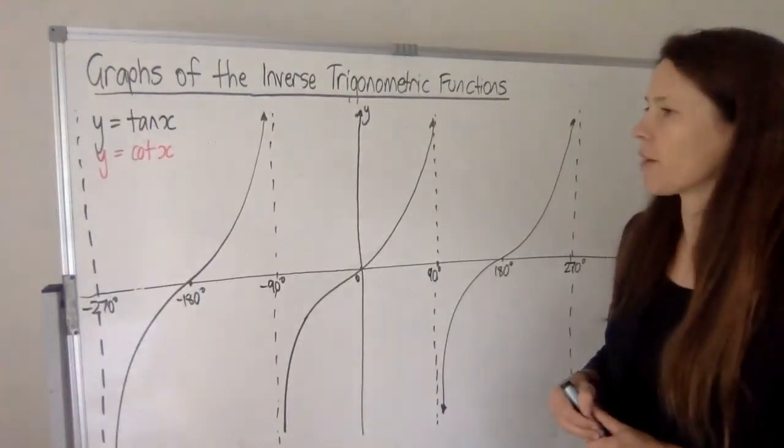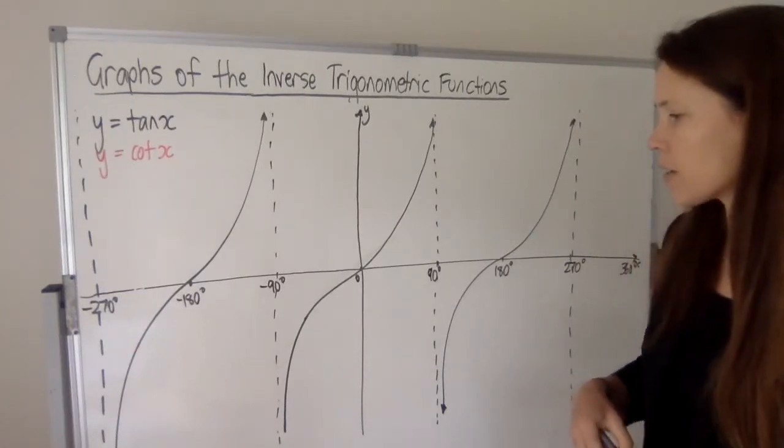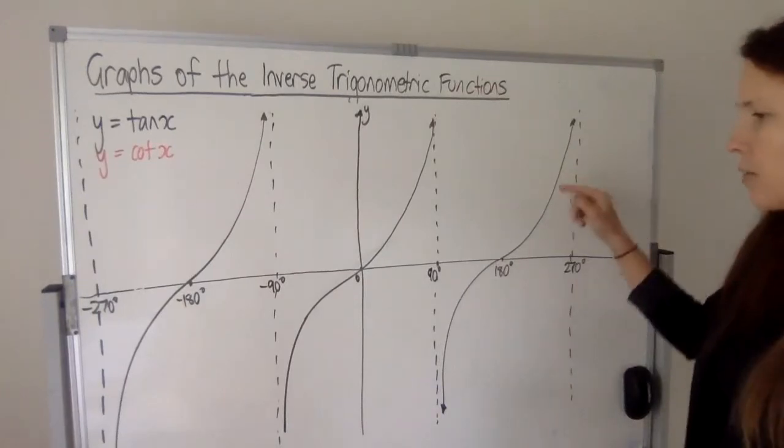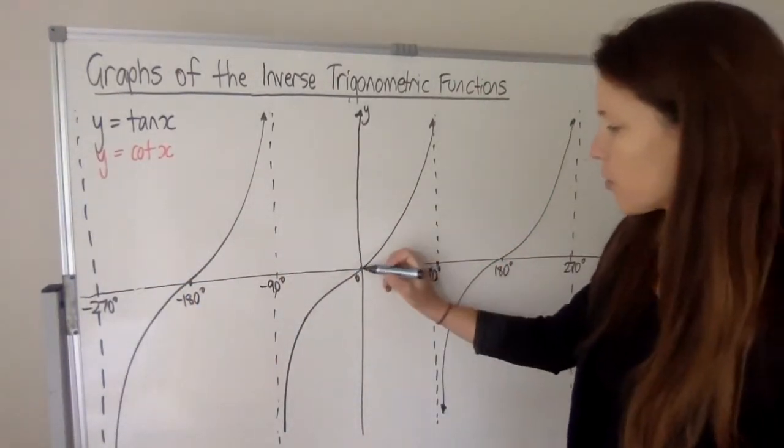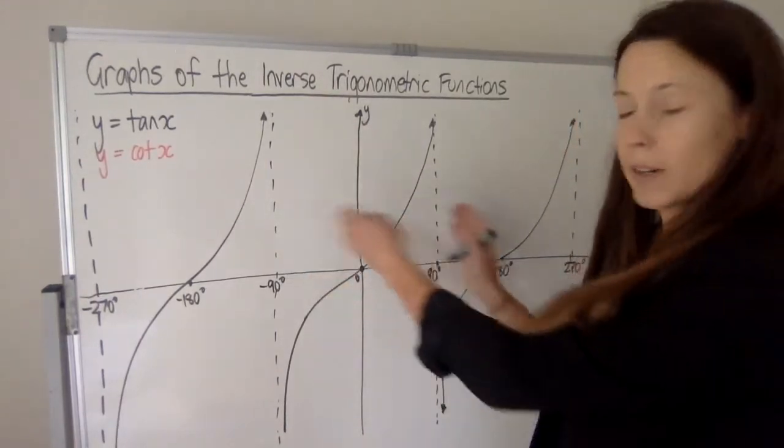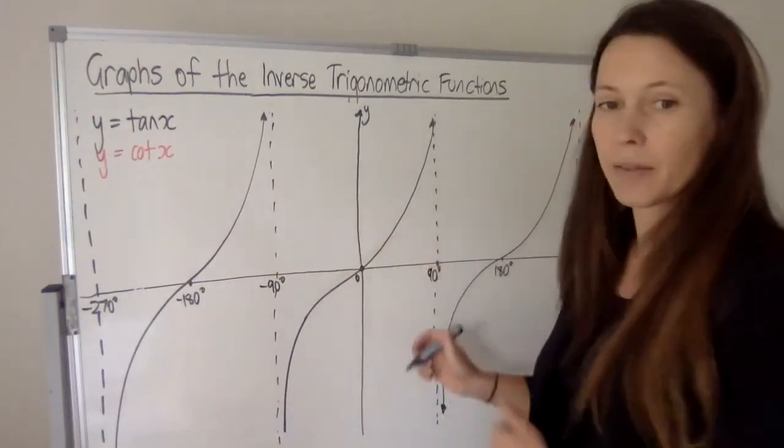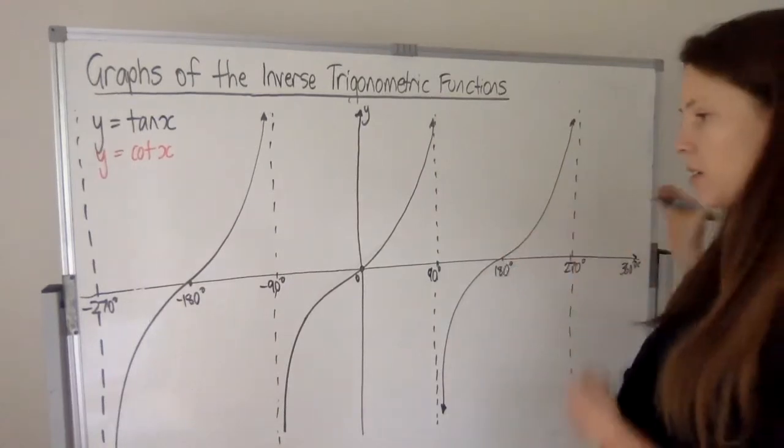And now to graph the last one cot x. If we start with a graph of y equals tan x, we can see that we get these familiar patterns. They look a little bit like cubic curves and they happen every 180 degrees. They're a peak. It goes through the origin. And so that helps remind you that if it's got a 180 degree width almost, then 90 of that is on either side of the origin. So we've got asymptotes at minus 90 and 90 and so on.